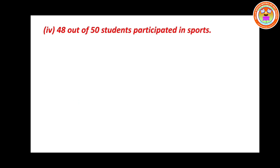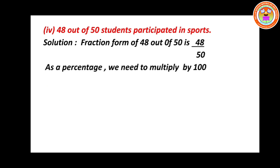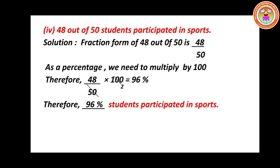Subdivision 4: 48 out of 50 students participated in sports. Fraction form: 48 divided by 50. As a percentage: 48 divided by 50 into 100 — cancelling 50 and 100 by 2 — gives 48 into 2 equals 96%. Therefore, 96% of students participated in sports.